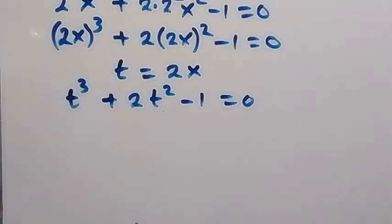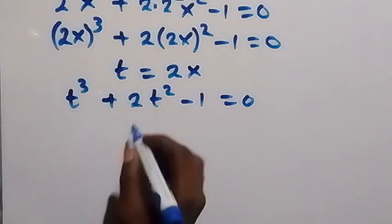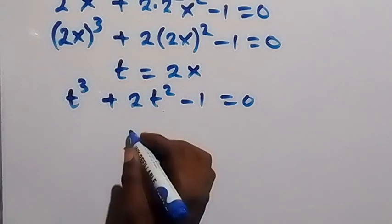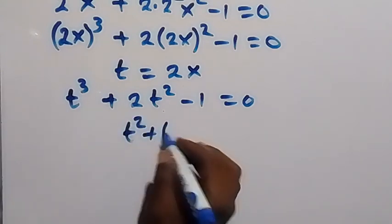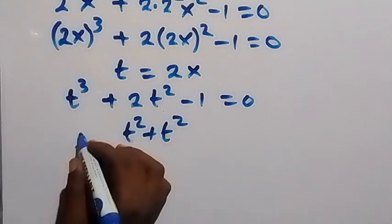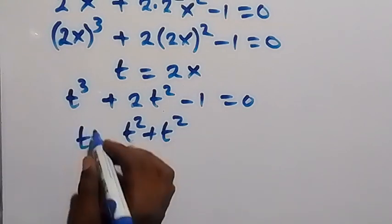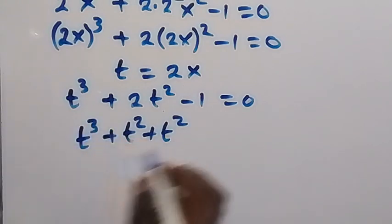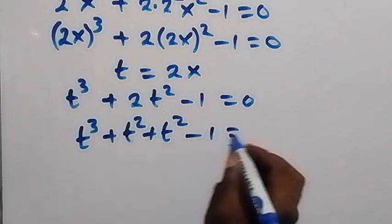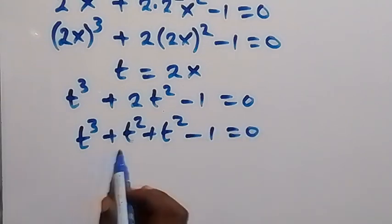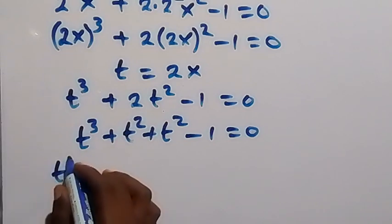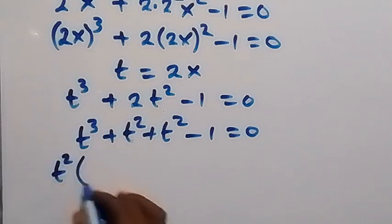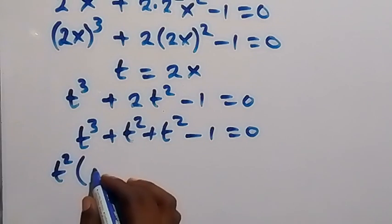We can solve this with any method of our choice. From here we can separate 2t squared as t squared plus t squared. And when we combine this plus that, we have t cubed plus t squared, plus t squared. Then minus 1 equals to 0. Then we factor out the common term from these two — we have t squared common, giving t squared into bracket t plus 1.